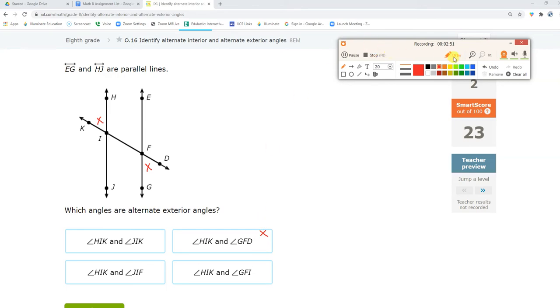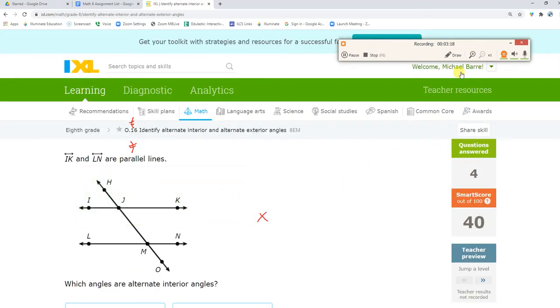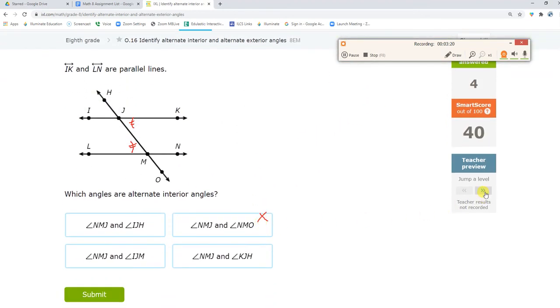Angle POL. This guy. I'm looking for his alternate interior, which is right there. Angle KLO. Let's jump a level, see what happens.